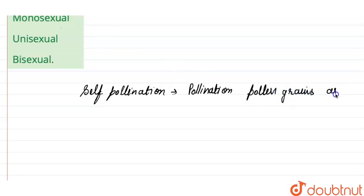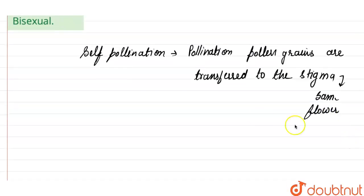Now let's first understand about self-pollination. What is self-pollination? As we know, self-pollination is the type of pollination in which the pollen grains are transferred to the stigma of the same flower.